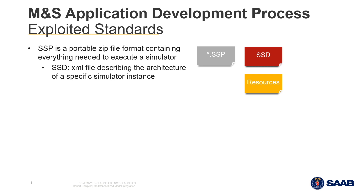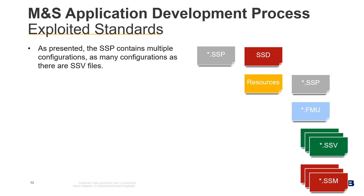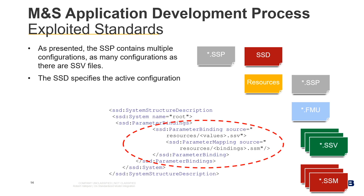The SSD file primarily describes the architecture of the simulators — in other words, how the different simulator constituent parts are connected to one another. The resources folder can contain other SSP files, FMUs, and so-called System Structure Values or SSV files. Simulator parameter values are specified in these SSV files and can be mapped to FMU parameters via name identification or via so-called System Structure Mapping files. The SSP contains multiple simulator configurations, just as many as there are SSV files, and which SSV file is active is specified in the SSD file.